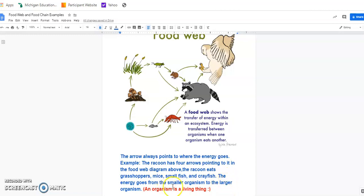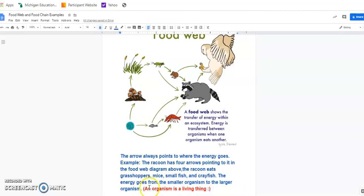The energy goes from the smaller organism to the larger organism. And an organism is a living thing. From microscopic to the large apex predator. Even your producers are organisms. They are living.